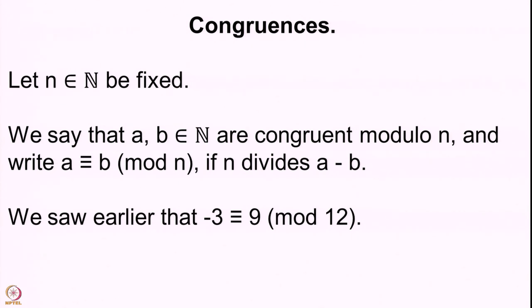This is easy to check because 9 minus minus 3, which is 9 plus 3, is 12, which is divisible by 12. So 9 is indeed congruent to minus 3 modulo 12. But some of you may question that the definition of congruence we gave was only for pairs a, b coming from natural numbers — how do you allow minus 3 then?